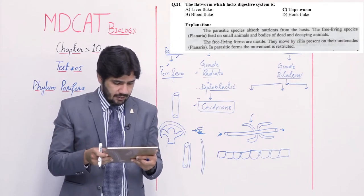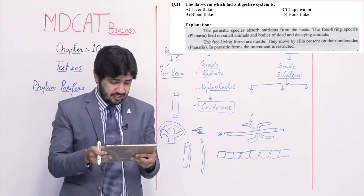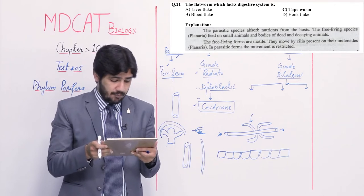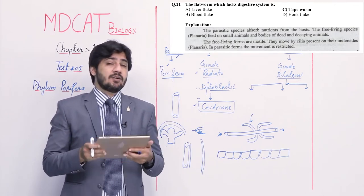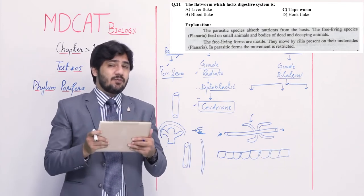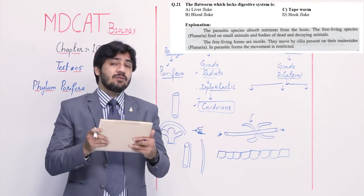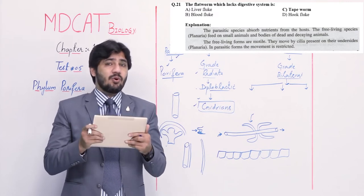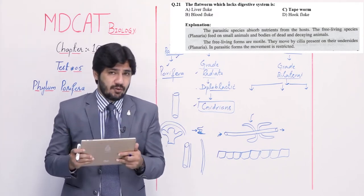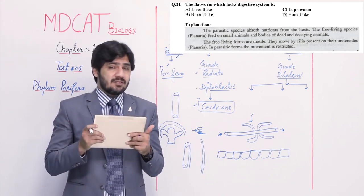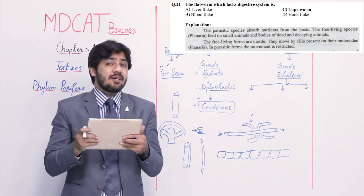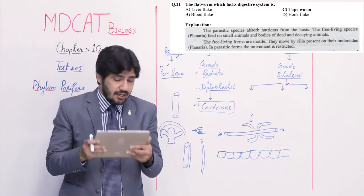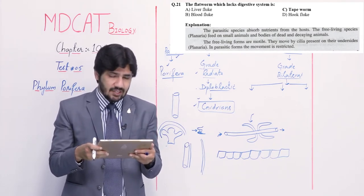Question number 21: the flatworm which lacks a digestive system is — alpha liver fluke, beta blood fluke, charlie tapeworm, and delta hook fluke. Platyhelminthes are more developed system-wise than Nidarians, but most members are parasites so their systems are reduced. In tapeworm, the digestive system does not exist at all. Right option is charlie — tapeworm. In others, the digestive system exists in reduced form.